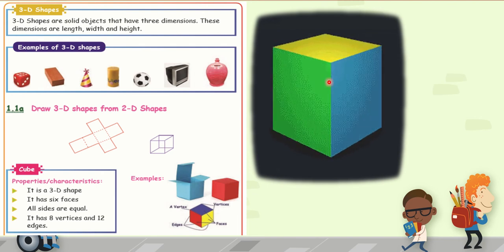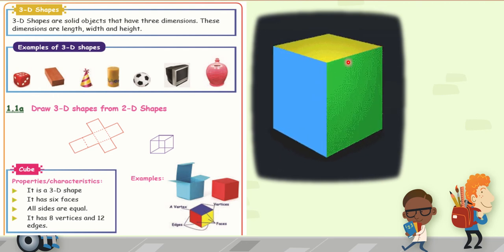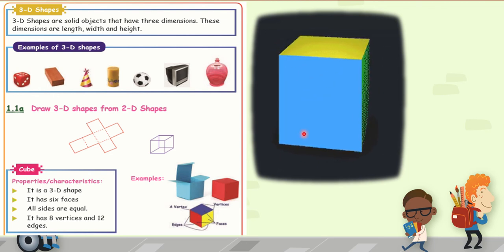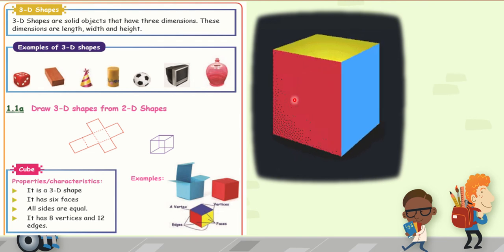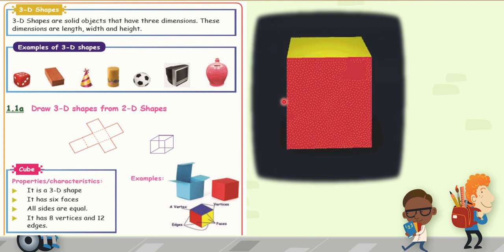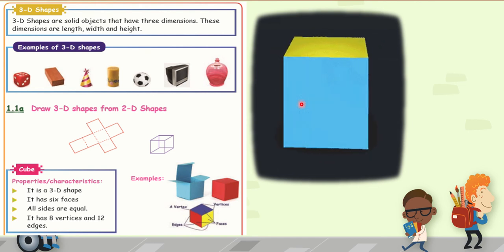Next step. How many edges are there? Edges means this one. 1, 2, 3, 4, 5, 6, 7, 8, 9, 10, 11, 12. It has 12 edges.